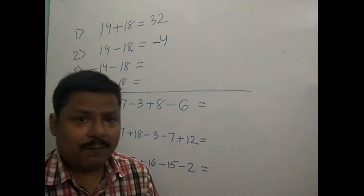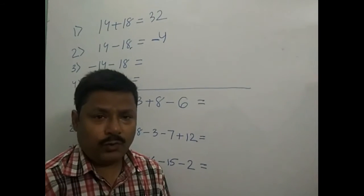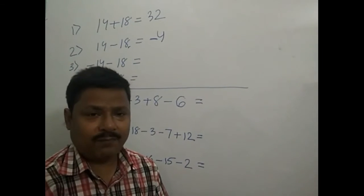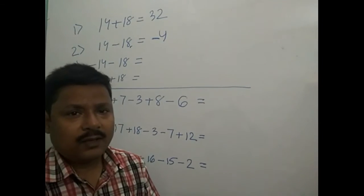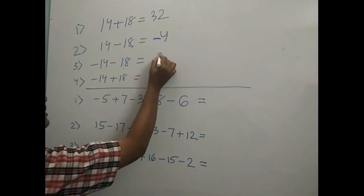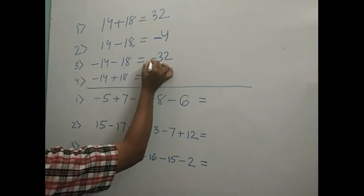Now, two negative numbers. Again what we are going to do, we are going to add them both and give the sign, that is negative sign, to the result. Minus 14 minus 18 is equal to minus 32.